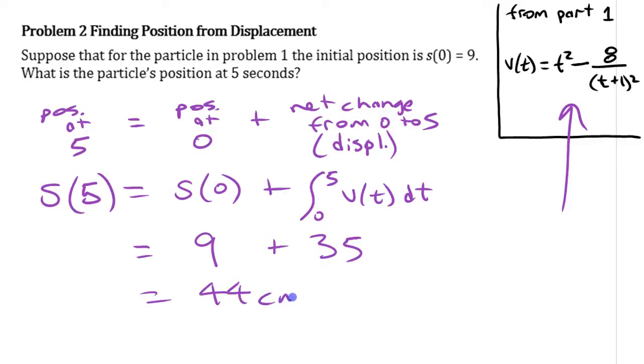That's the actual position of the particle at the end of five seconds, different than its displacement. That's actually where it's sitting on the number line, not how much it's changed.